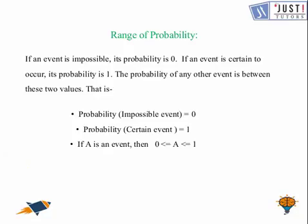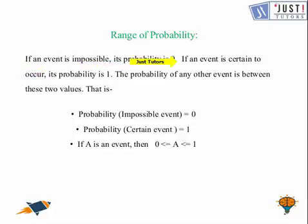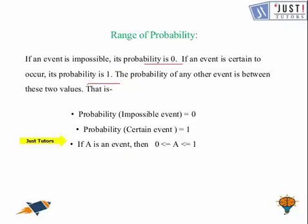Let us move further now. Here, range of probability. If an event is impossible — like if I say there are 13 months in one year — that's an impossible event, so the probability for such an event is 0. And if an event is certain to occur — like if I say there are 12 months in one year — that is certain, so the probability for it will be 1. It's a range from 0 to 1 and all other probabilities will lie between these two. Remember that probability cannot be bigger than 1, neither can it be smaller than 0.